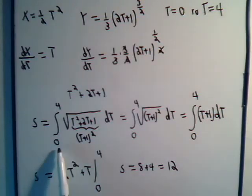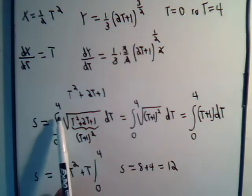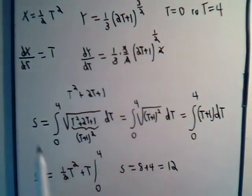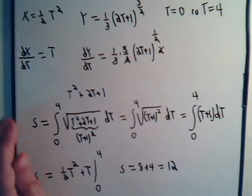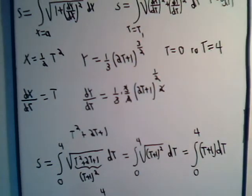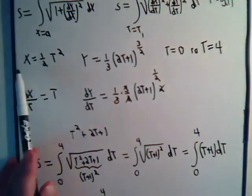From the time t equals 0 to t equals 4, the path of the particle is determined by these parametric equations here.